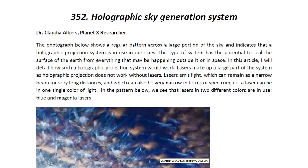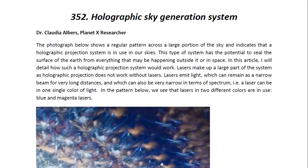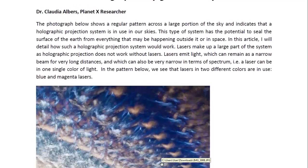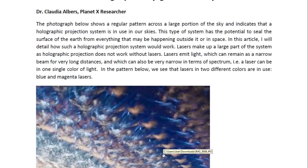This one is entitled Holographic Sky Generation System. Now the photograph below shows a regular pattern across a large portion of the sky and indicates that a holographic projection system is in use in our skies. This type of system has the potential to seal the surface of the air from everything that may be happening outside it or in space. In this article I'll detail how such a holographic projection system would work.